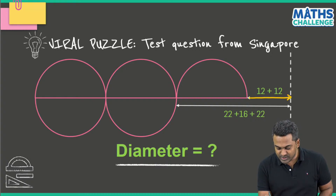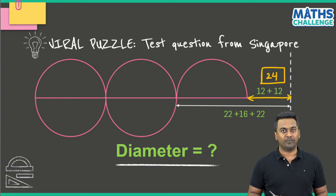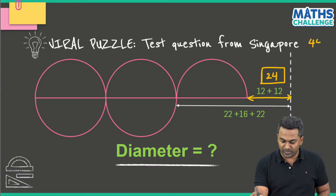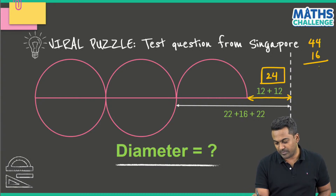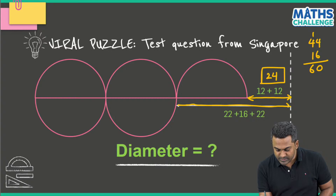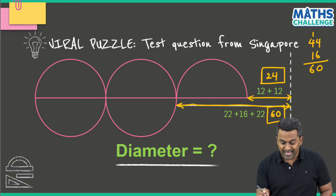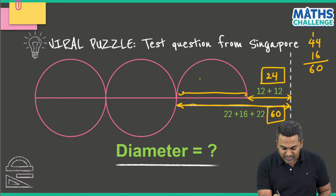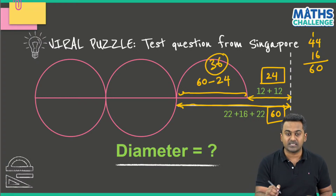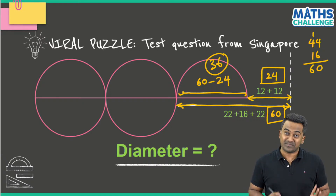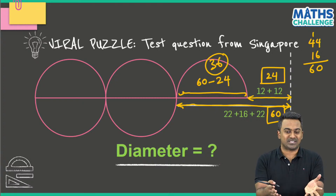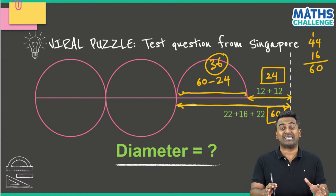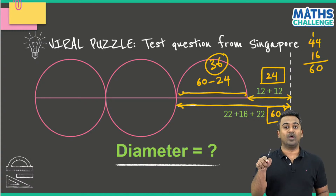Looking at the final shape: the top part is 12 plus 12, which is 24. The bottom movement was 16 plus 22 plus 22, which is 44 plus 16, giving us 60. So this complete part is 60. To get the diameter, I remove the 24: 60 minus 24 gives us 36. This is a much more creative way of figuring out the answer - simply gliding the semicircles to the left. This requires a bit of imagination, and that is the goal of this entire series called Math Challenge.